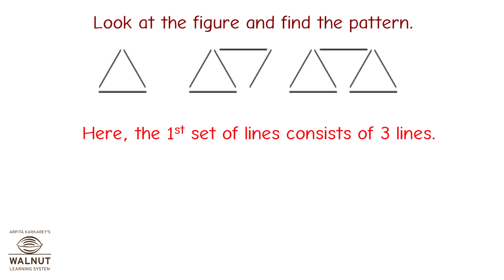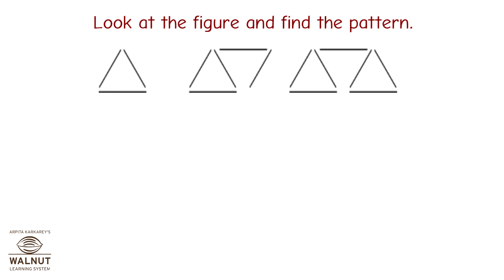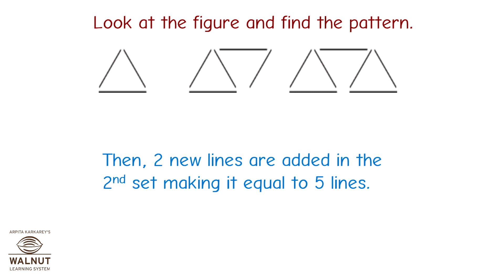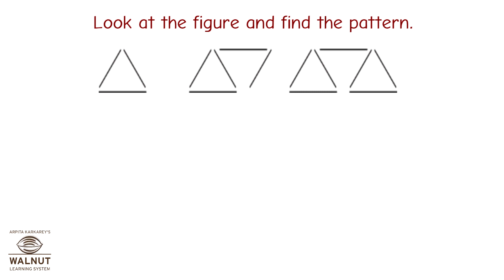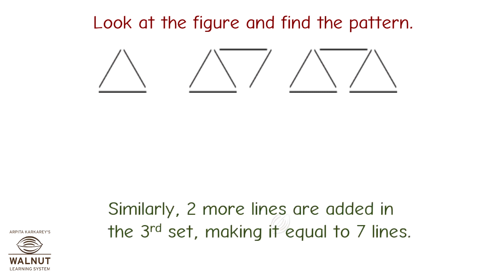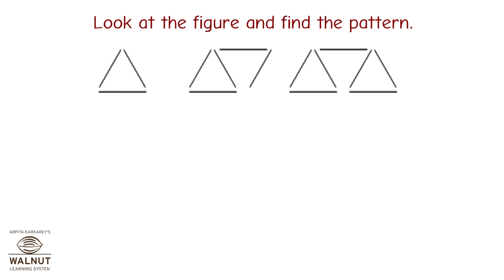Look at the figure and find the pattern. Here, the first set of lines consists of three lines. Then, two new lines are added in the second set making it equal to five lines. Similarly, two more lines are added in the third set making it equal to seven lines. This pattern will continue.